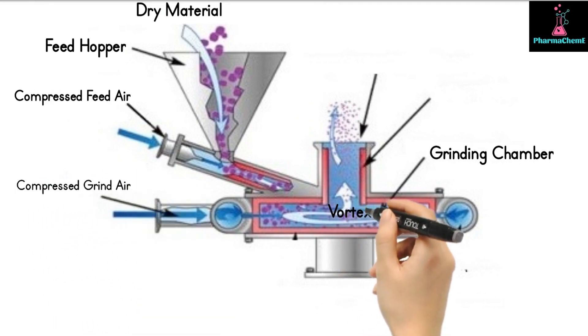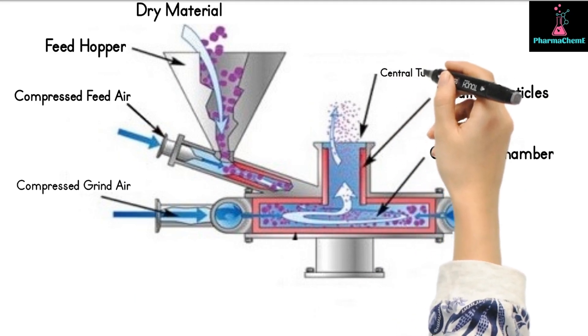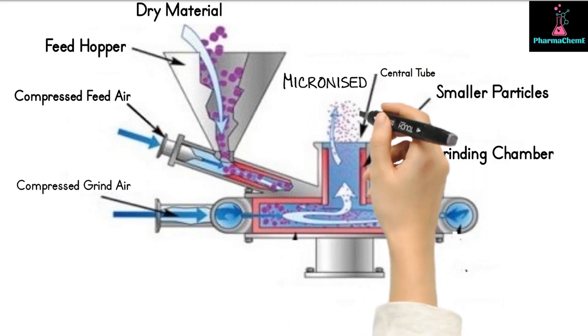Material particles collide and break down into finer sizes. Smaller particles are carried to the chamber's center and exit through a central tube as micronized product.